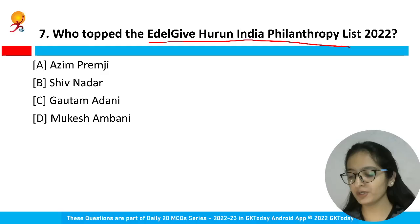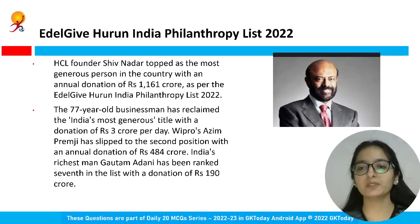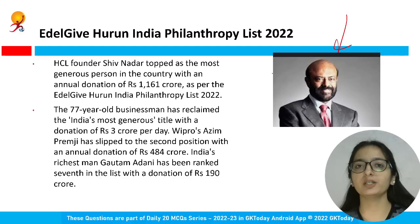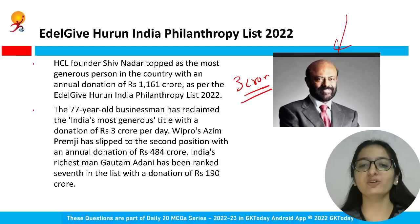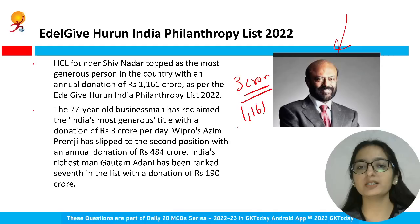The next question asks who topped the Hurun India Philanthropy List. The hint is that it's the owner of HCL Technology — that's Shiv Nadar, option B. HCL founder Shiv Nadar topped the list as the most generous person in the country, donating three crore rupees per day. The 77-year-old businessman's annual donation is 1161 crore rupees.